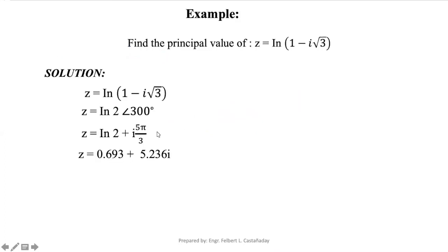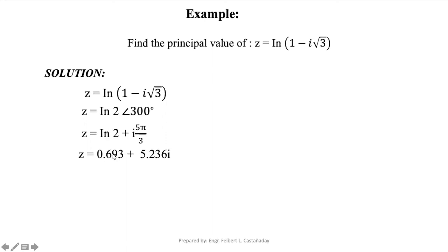Now let's find the principal value of z equals ln(1 minus i√3). Convert the rectangular form to polar form: the result is 2 at argument 300 degrees. Converting 300 degrees to radian measure gives 5π/3. Therefore, ln(z) equals ln(2) plus i·(5π/3). Computing ln(2) gives approximately 0.693, so the principal value is 0.693 plus 5.236i.